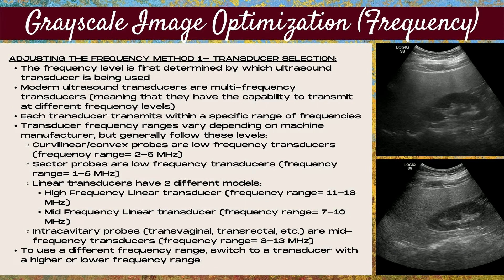Let's talk about the first method of adjusting the frequency: transducer selection. The frequency level is first determined by which ultrasound transducer is being used. Modern ultrasound transducers are multi-frequency transducers, meaning they have the capability to transmit at different frequency levels. Each transducer transmits within a specific range, varying by machine and manufacturer, but generally: curvilinear or convex probes are low-frequency transducers with a range of roughly 2 to 6 megahertz.